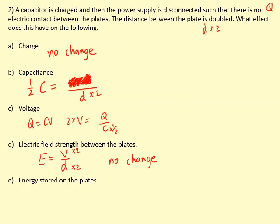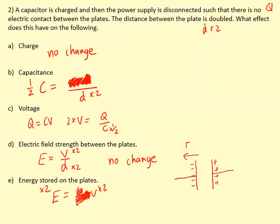For the energy stored, we use W = ½QV. Q is constant, and voltage has doubled, so the energy stored also doubles. Note: don't confuse the two E's — one is electric field strength and the other is energy stored. The question is: where does this extra energy come from? Because the plates are charged and being pulled apart, the person pulling them apart did work against the electrostatic attraction — force times distance — and that work is stored as electrical potential energy.